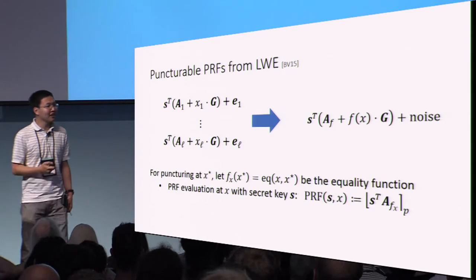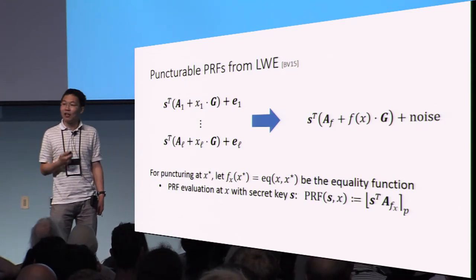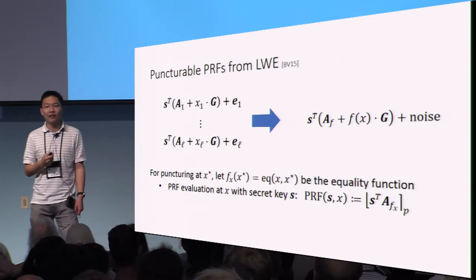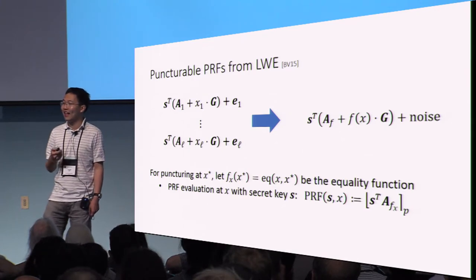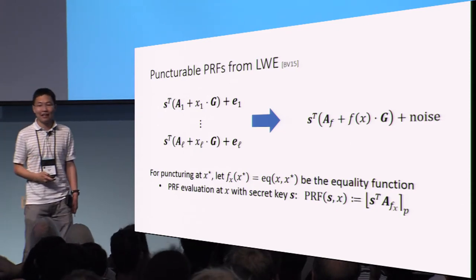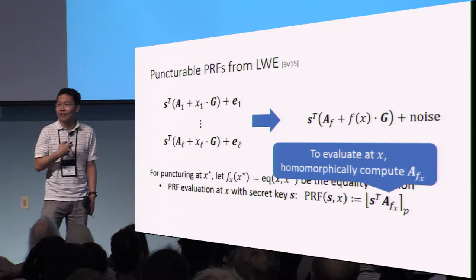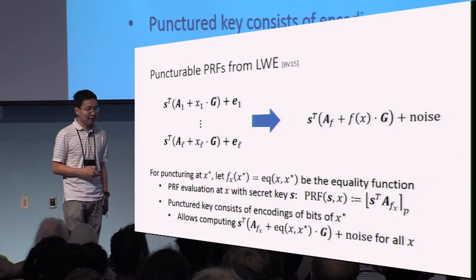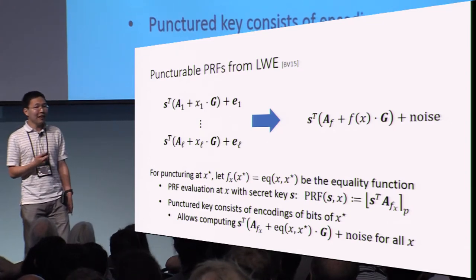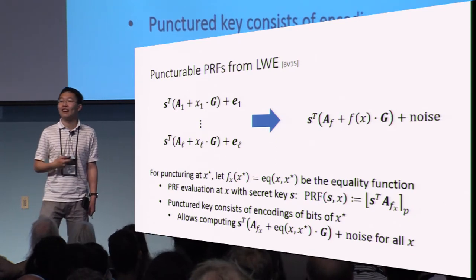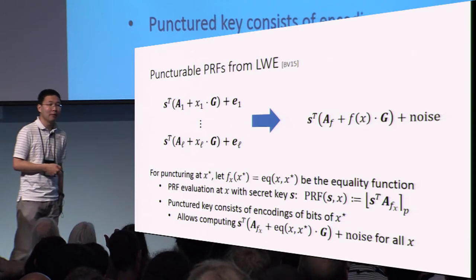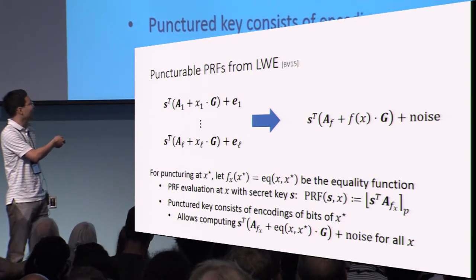To puncture at a point x*, the class of functionalities we consider is the equality function, because in a puncturable PRF the punctured key enables evaluation everywhere except a single point. The equality function is zero everywhere except at a single point. The real PRF evaluation, where the secret key is the LWE secret S, corresponds to S^T times A_F. To evaluate at a point x, we just homomorphically compute this function and multiply by the LWE secret. The punctured key consists of the encoding of the bits of x* — this allows the evaluator to compute any function on x*, and in particular the equality function, so it can compute all quantities of this form. Notice that as long as x is not equal to x*, this term vanishes and we're left with the real PRF evaluation. This precisely gives us a puncturable PRF. However, we want something more: we want at least privacy, which hides the punctured point. Unfortunately, the Brakerski-Vaikuntanathan PRF does not provide privacy, because in order to evaluate the PRF using the punctured key we actually require knowledge of the punctured point x*.